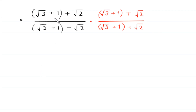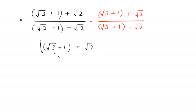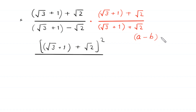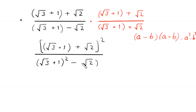Now, in the numerator we have the same expression times itself, so this becomes the whole squared: square root of 3 plus 1 plus square root of 2, whole squared. In the denominator, the expressions are in the form of a minus b times a plus b, which equals a squared minus b squared. So the denominator becomes square root of 3 plus 1, squared, minus square root of 2 squared.